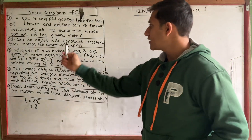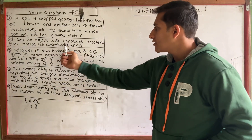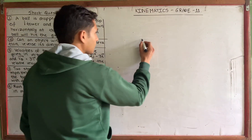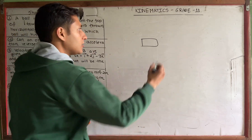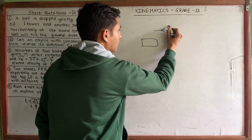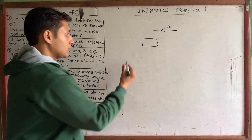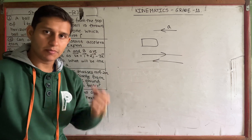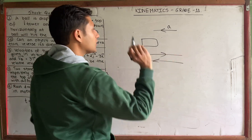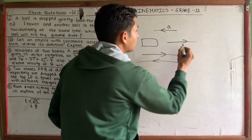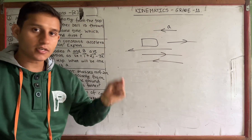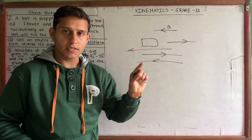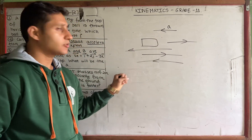Now number 2: Can an object with constant acceleration reverse its direction? What does this mean? Acceleration is not always in the expected direction; it can be opposite to the direction of motion, as shown.